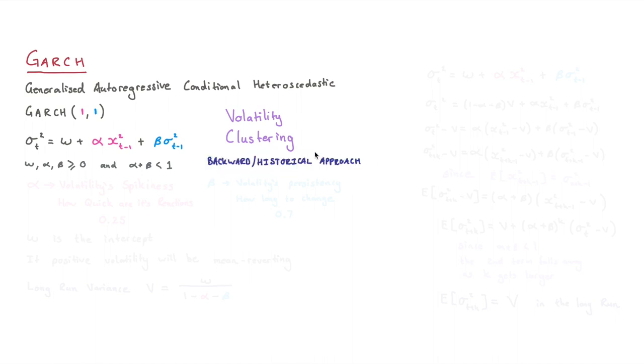Now it's important to know that this is the backwards or historical approach, and in another video we're going to look at the forward or implied approach where you use the Black-Scholes model. So this is a different technique. But anyway, coming back to our little model over here, you can see we're measuring volatility.